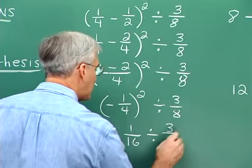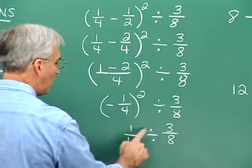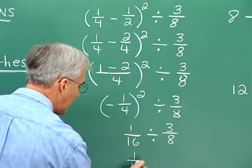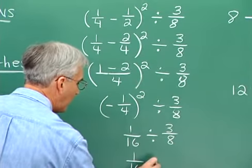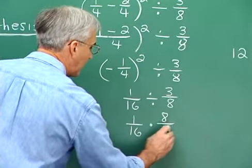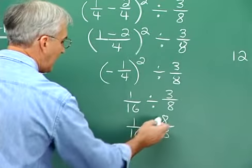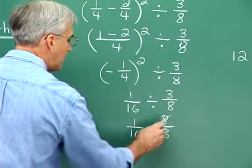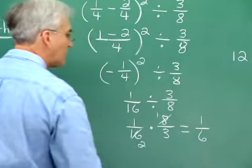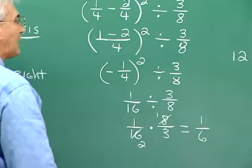We bring down the other business, giving us 1 sixteenth divided by 3 eighths. We change the sign to times, flip over that second fraction, and multiply. The 8 and 16 can cancel — 8 into 16 is 2. Multiplying straight across: 1 times 1 is 1, and 2 times 3 is 6. So 1 sixth is our answer.